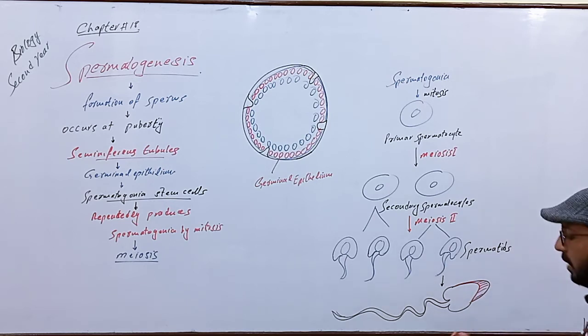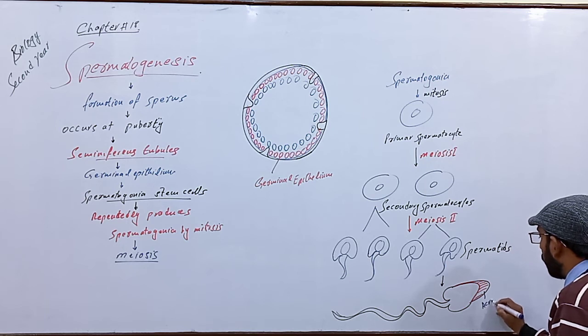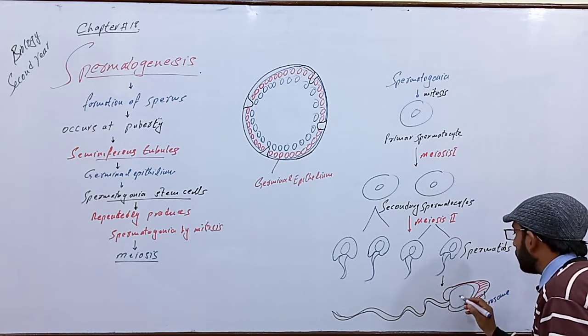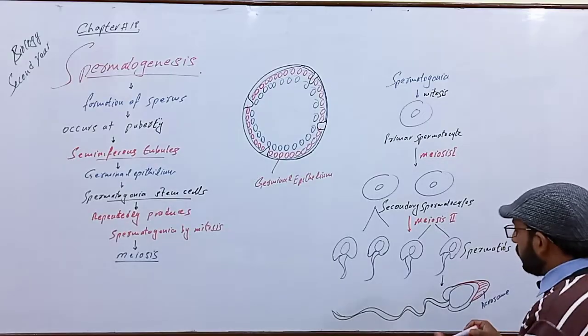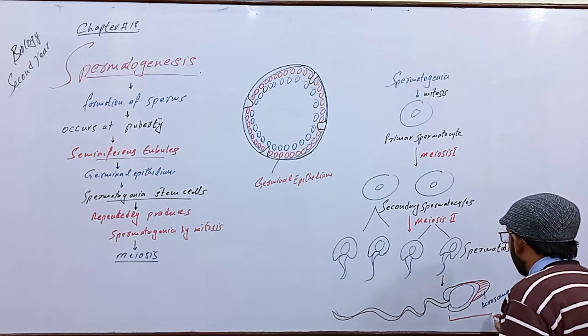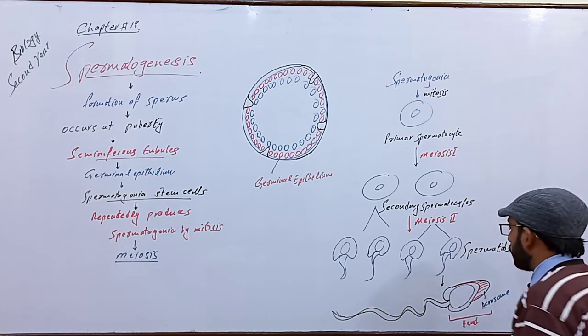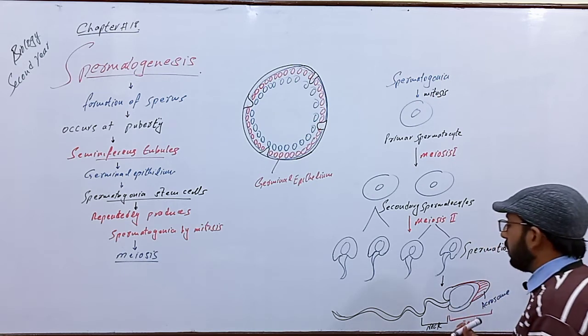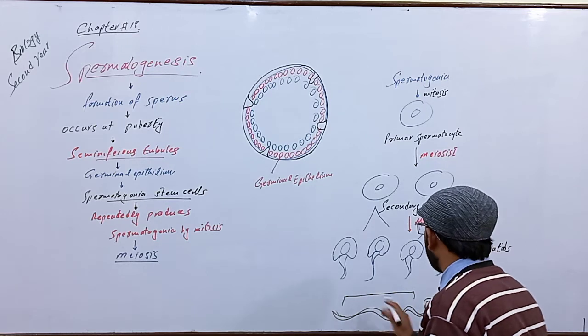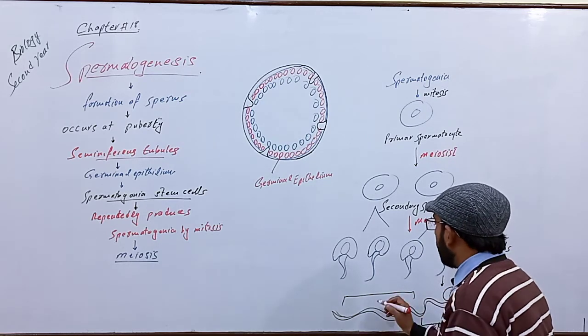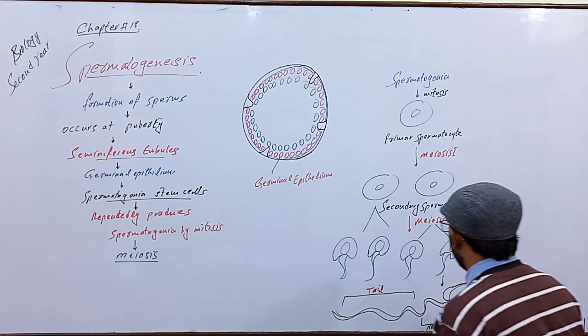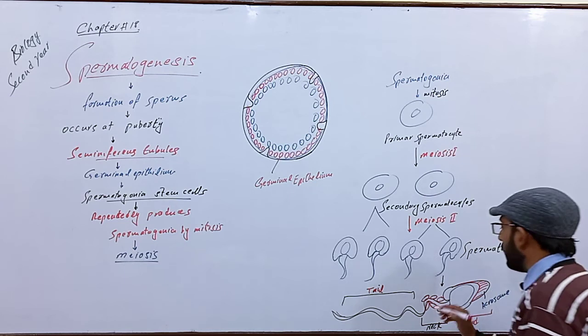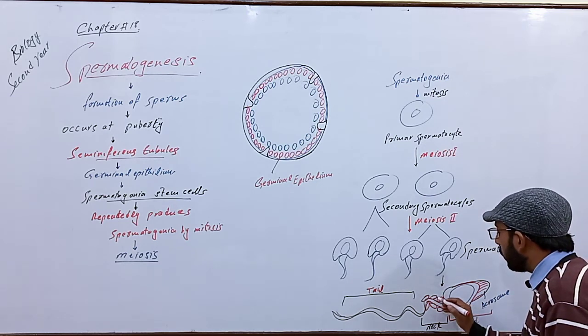The head of the sperm contains the nucleus that delivers genetic material into the egg cell. On the neck portion, we see that there is a mitochondrial ring that provides energy for the movement of the sperm. A large number of mitochondria surround the neck region of sperm.